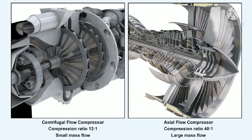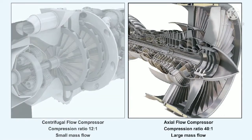A second advantage of the axial flow compressor, almost as important as the first, is that the mass flow which can be obtained through an axial flow compressor is potentially much greater than the mass flow which can be achieved through a centrifugal compressor. As a consequence of these factors, the development of the early centrifugal compressor engines was subjugated in favour of the advancement of the axial flow compressor engines, which continues today.